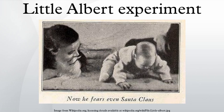The Little Albert experiment was a case study showing empirical evidence of classical conditioning in humans. This study was also an example of stimulus generalization. It was carried out by John B. Watson and his graduate student, Rosalie Rayner, at Johns Hopkins University. The results were first published in the February 1920 issue of the Journal of Experimental Psychology.